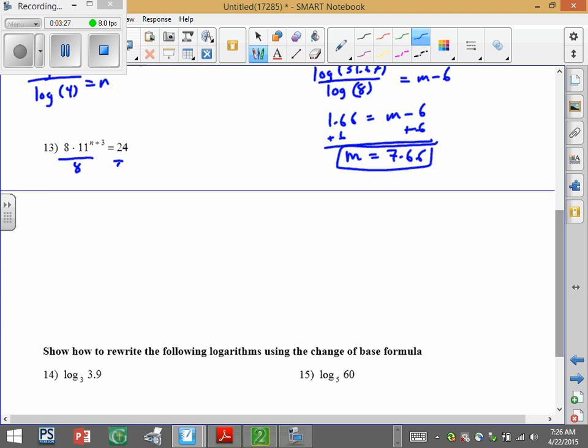So more here. Divide both sides by 8. So we have 11 to the n plus 3, and then 24 divided by 8 is 3. Now I've got the exponential by itself. So do log base 11 of 3 equals n plus 3. Use your change of base. So log of 3 over log of 11 is about 0.46 equals n plus 3. So subtract 3 from both sides. 0.46 minus 3, and then that gives you n equals negative 2.54.